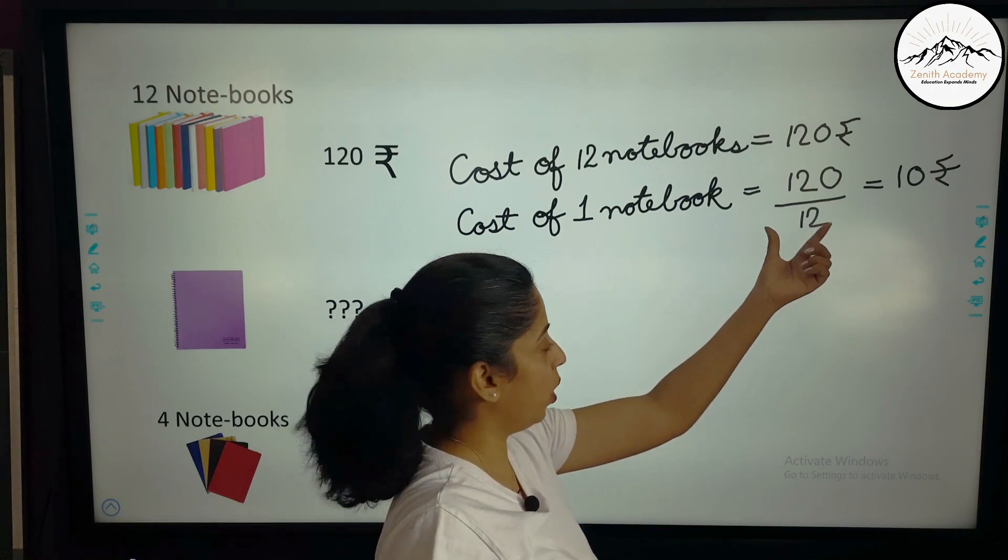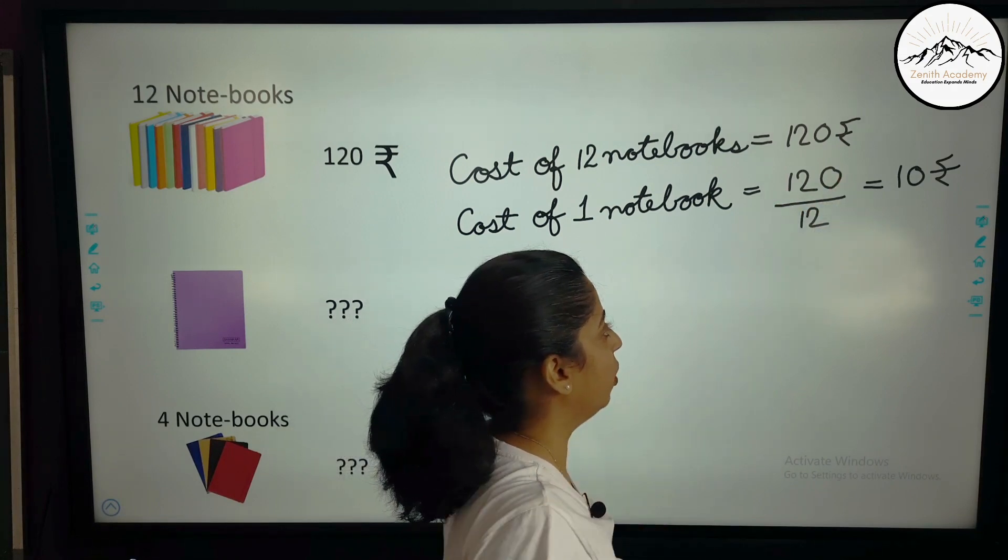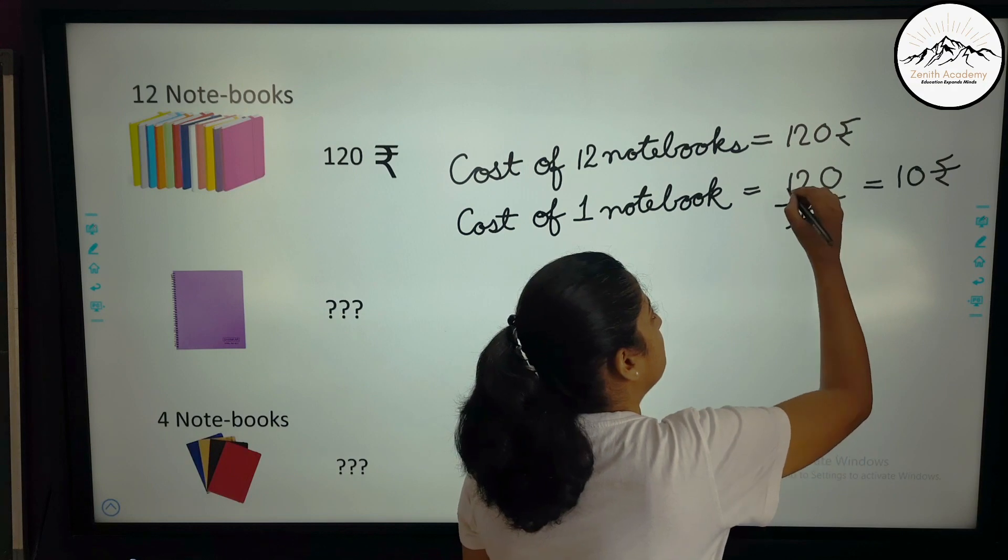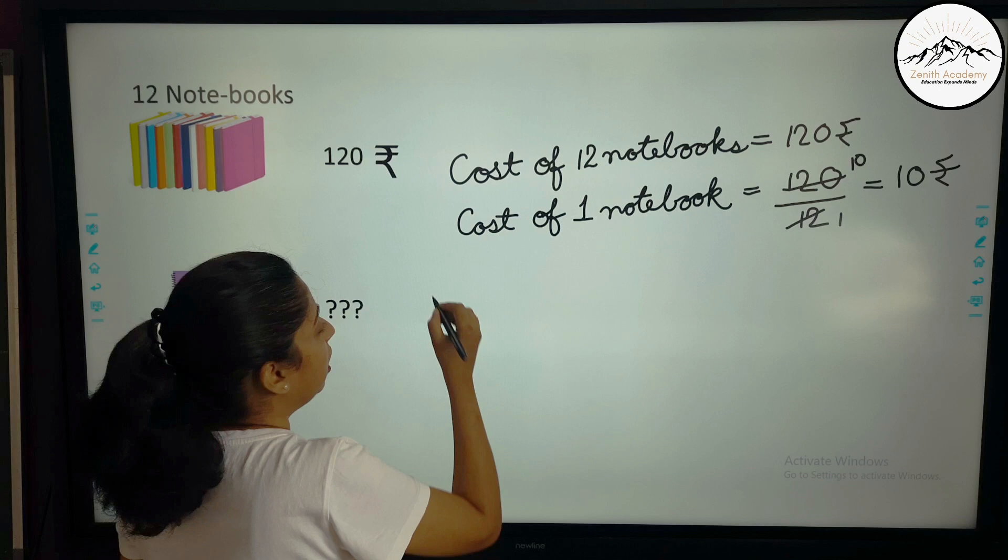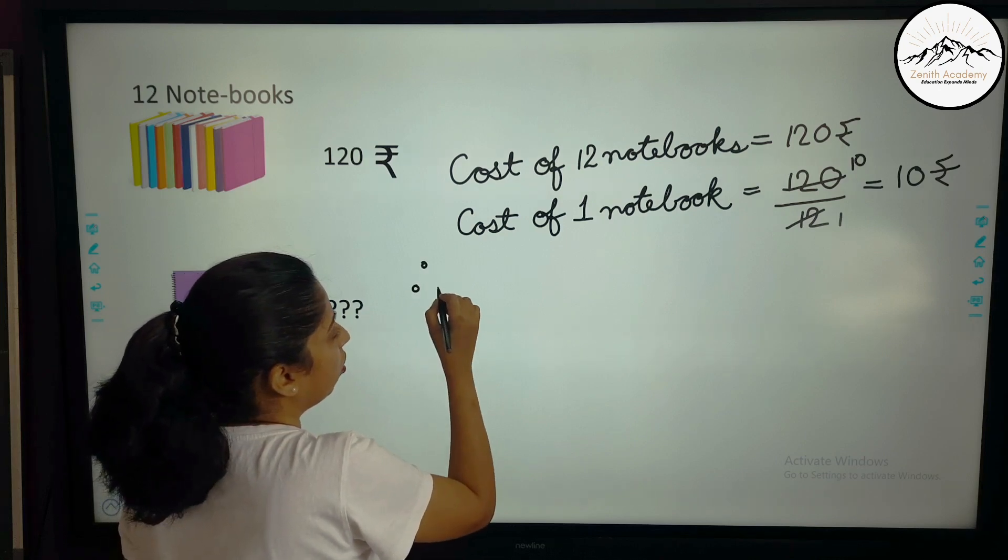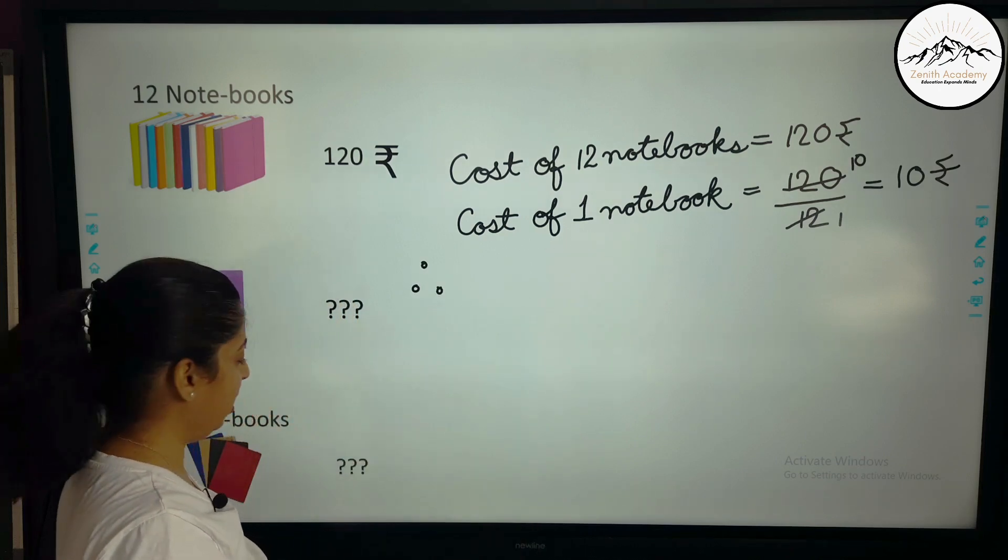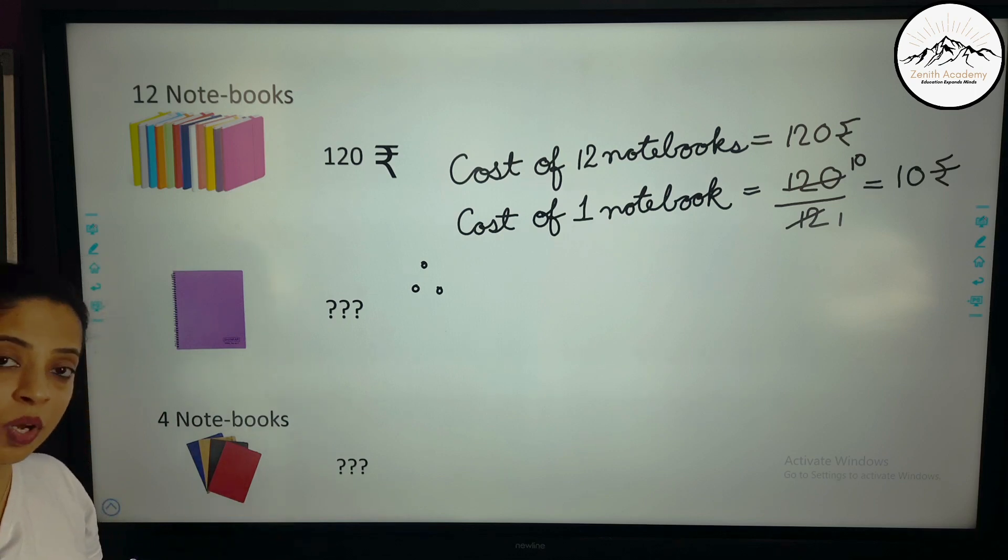12 ones, 12 and 12 tens, 120. So we can directly cut it to get 10 rupees. Now, since we have got cost of 1 notebook, it is very easy to find the cost of any number of notebooks now.